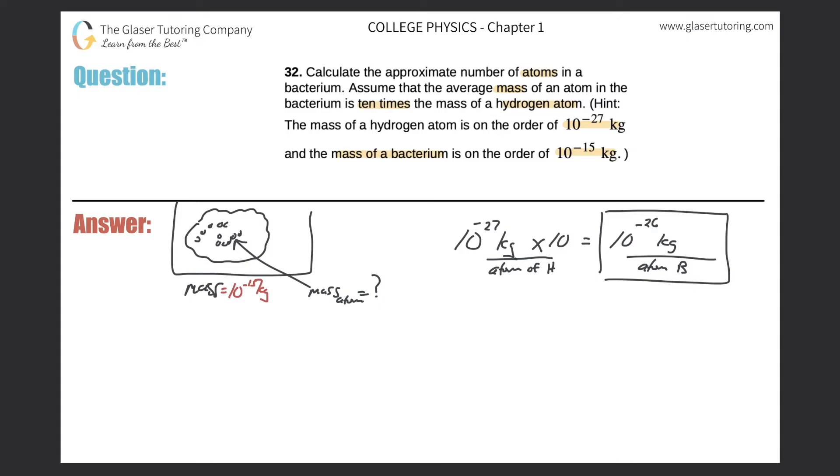So now, knowing this ratio and also knowing the total mass of the bacterium itself, could we now find the number of atoms? Well, I think we can. What I'm going to do is I'm going to take this ratio here, and I'm just going to flip it. Okay, so I put the atoms of the bacterium on top. Okay, so let me do that right down here. So for every one atom that's found in the bacterium, its weight is 10 raised to the negative 26 kilograms.